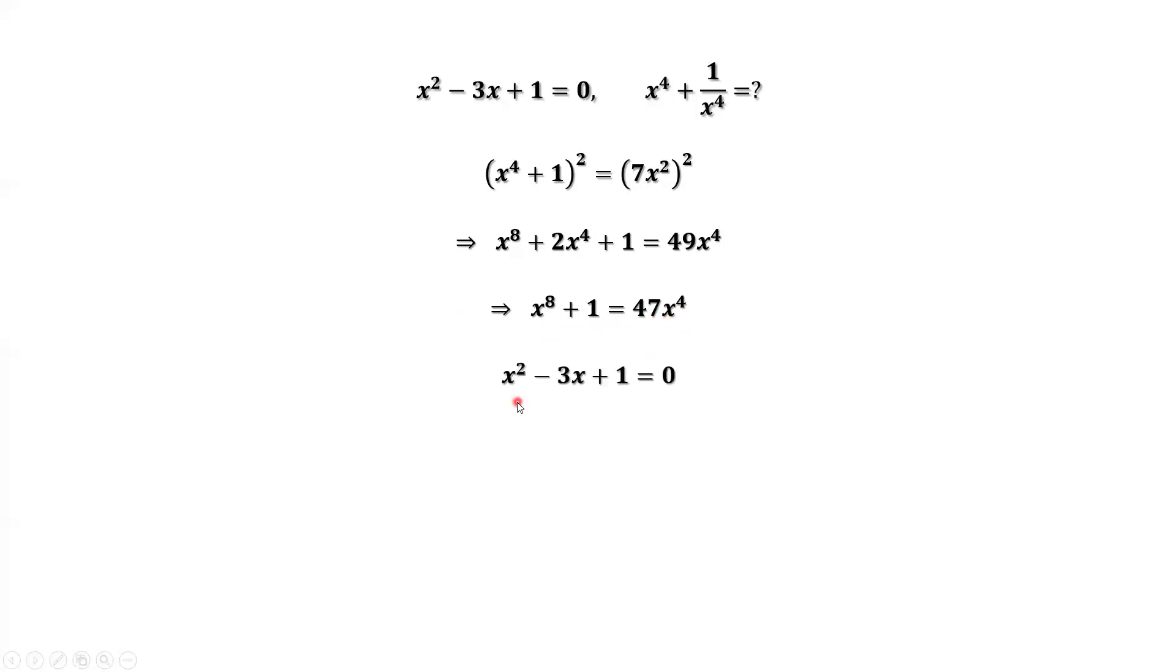This is the given condition. It is very easy to check x cannot be 0. If x equals 0, 1 equals 0. It is impossible. If x is not 0, we can divide this equation by x to the power of 4 on both sides. We have x to the power of 4 plus 1 over x to the power of 4 equals 47.